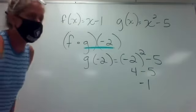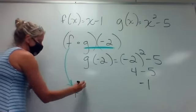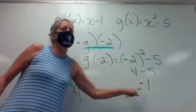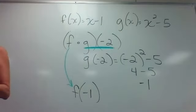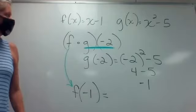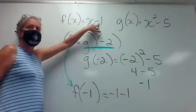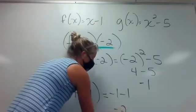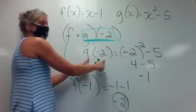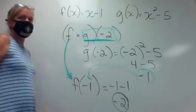Now that I have negative 1, I drop down the outer function — f — and find f of negative 1. Go to my f function and replace its x with negative 1. So I have negative 1 minus 1, which gives negative 2. The steps are: find the inner function first to get an answer, then plug that answer into the outer function.